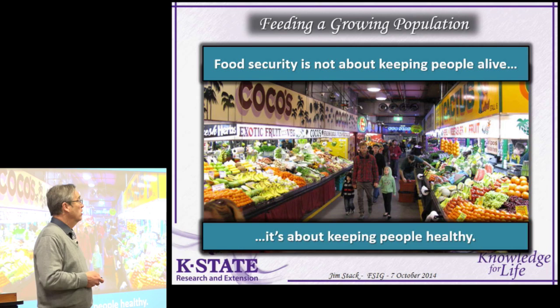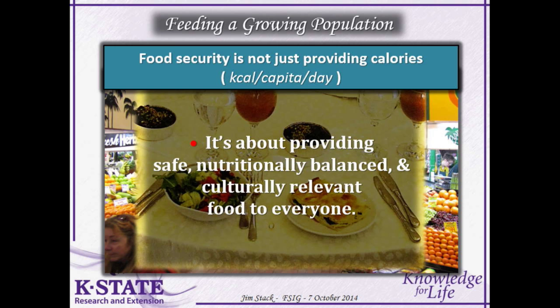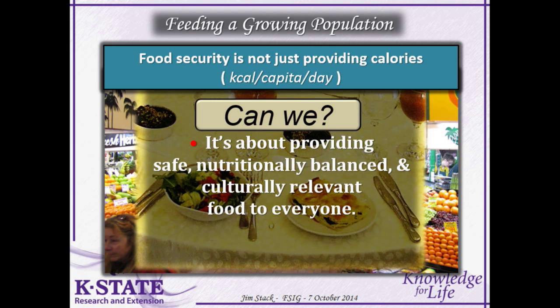Food security is not just about providing calories — it's about providing safe, nutritionally balanced, and culturally relevant food to everyone. Can we provide enough safe, nutritionally balanced, and culturally relevant food for everyone? Let's look at where we're at now. On October 31st of 2011, the world reached 7 billion people. 2 billion people live in poverty, 1 billion people are food insecure, and 100 million people live at risk of starvation.